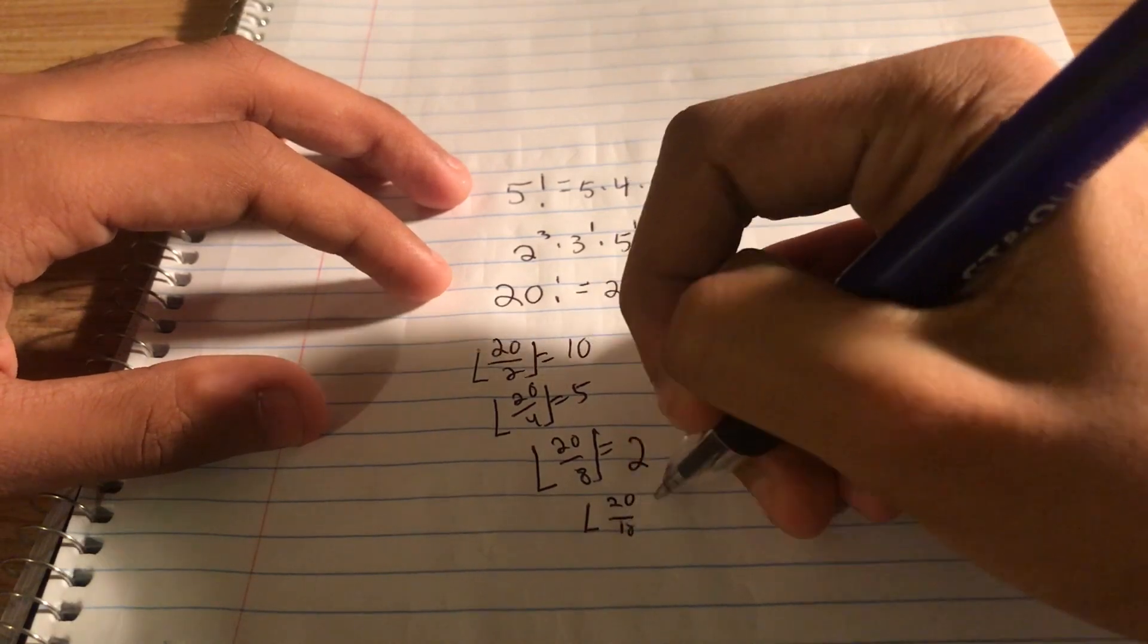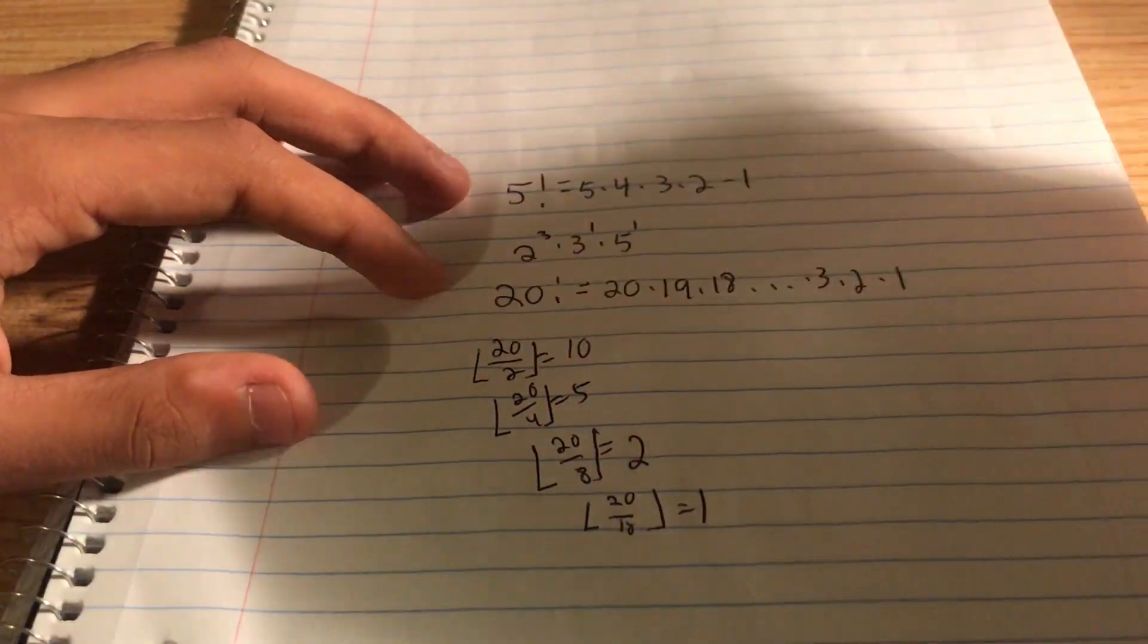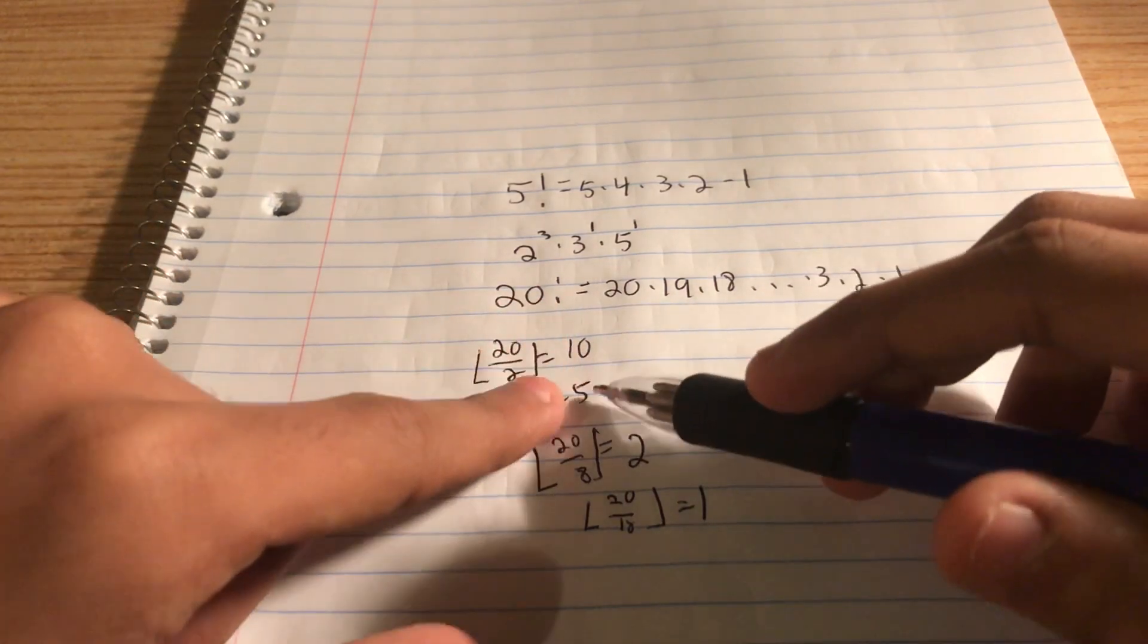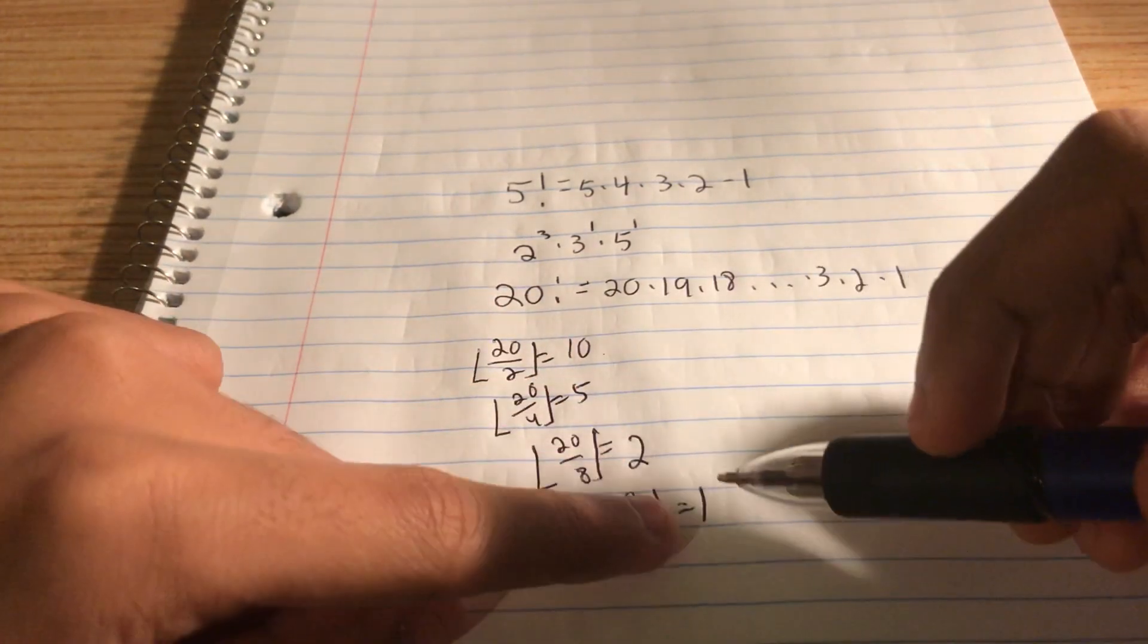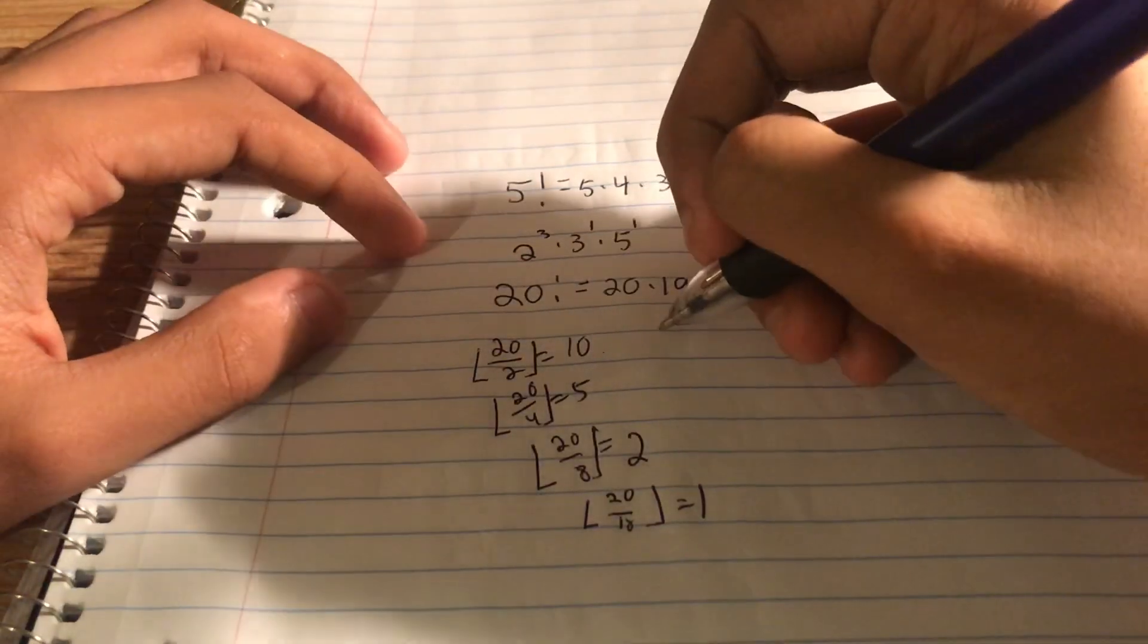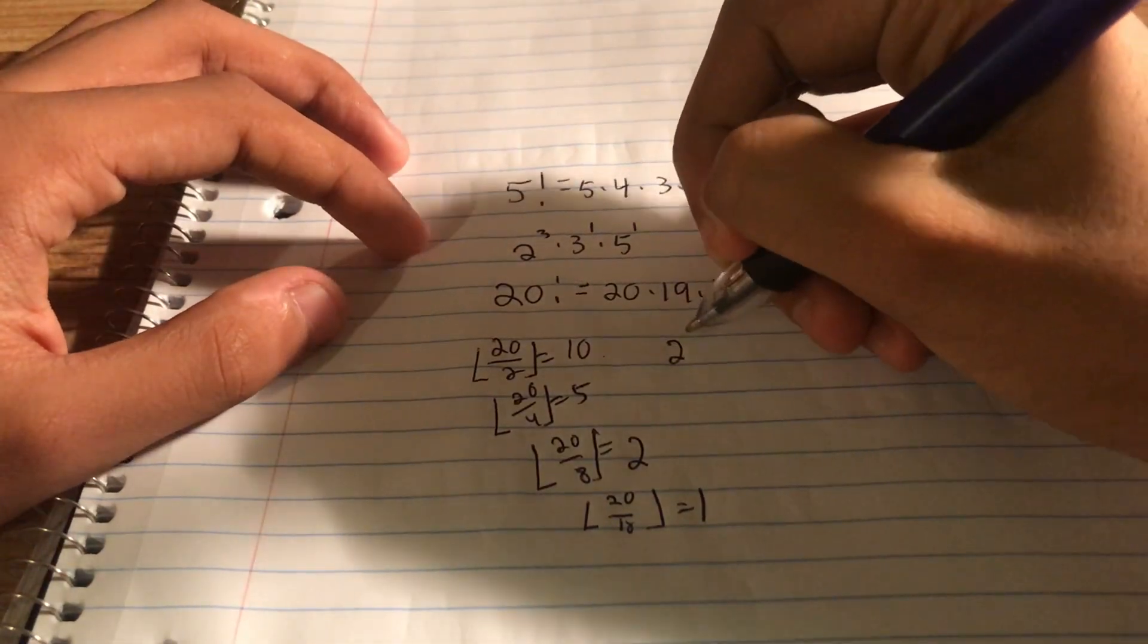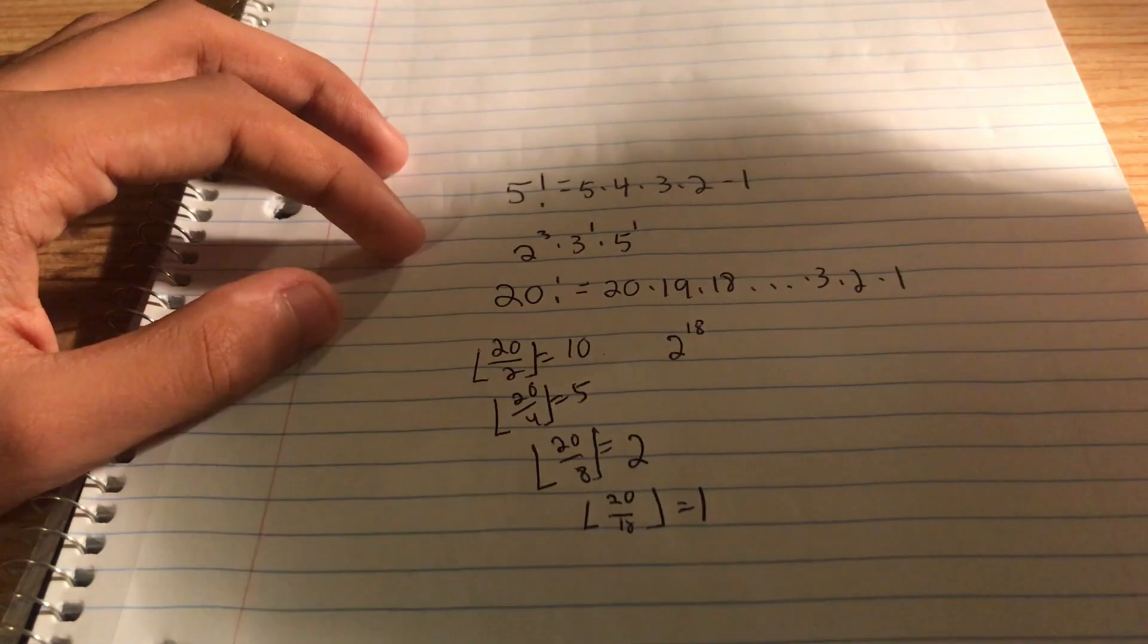20 divided by 16, the floor of that, is equal to 1. So this is the number of powers of 2 in 20 factorial. 10 plus 5 plus 2 plus 1. That gives us 18. 2 to the power of 18. Let's do this for 3.